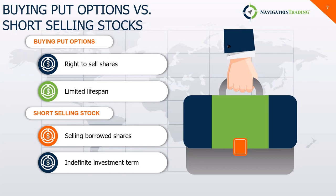Let's talk about the differences between options and stocks when it comes to buying put options. The equatable strategy for stocks is actually going to be short selling stocks. Buying a put option gives you the right but not the obligation to sell shares of an underlying asset at the strike price, and you gain that right by paying a premium. Short selling stock is when you are selling borrowed shares with the intent of buying them back later at a lower price. With both buying put options and short selling stock, you're going with the bias of a stock actually falling — that is how you benefit from either strategy.